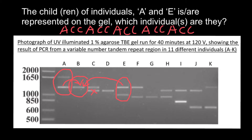Let's think about person D. Neither parent A nor parent E has the allele sizes shown for person D, so we can exclude that genotype. As for person F, while both parents have one of the allele sizes, neither parent can contribute the other allele to this person, so person F is also not a possible child of these two parents.